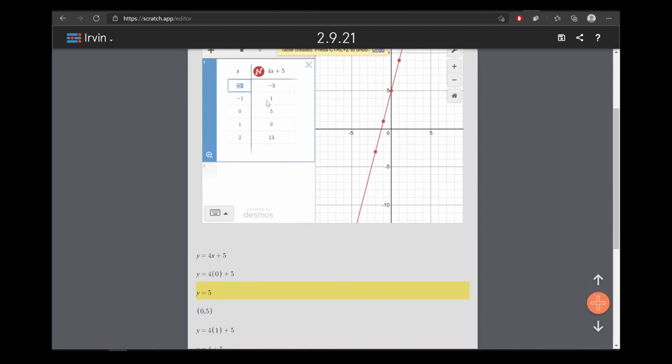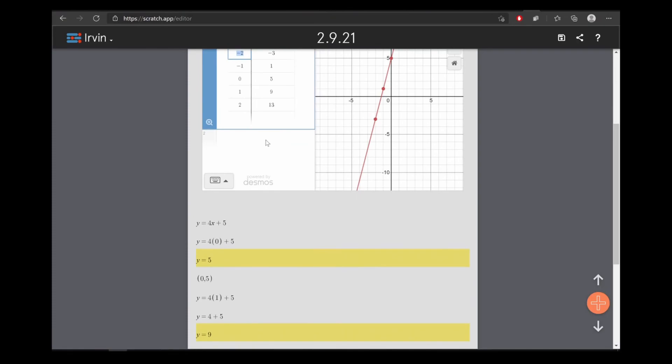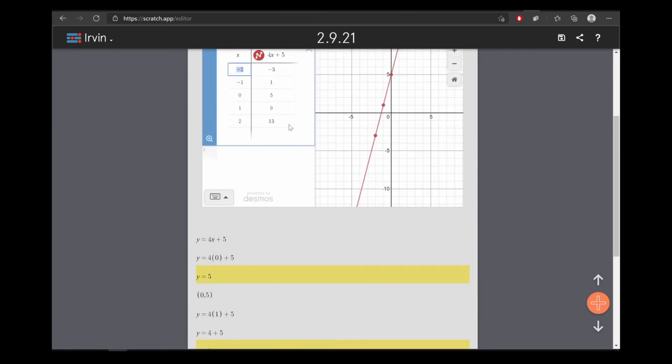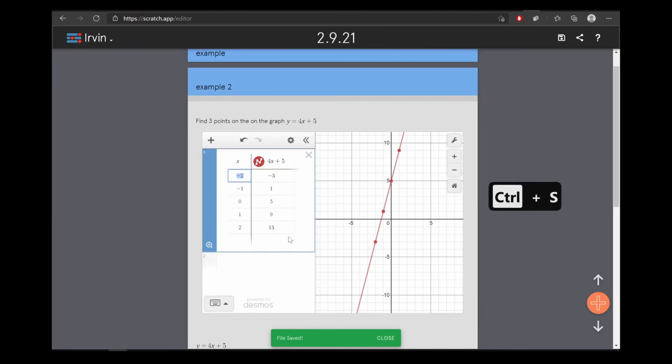So, 0, 5. Negative 1, 1. And 1 is 9. We're all good. Save. Save.